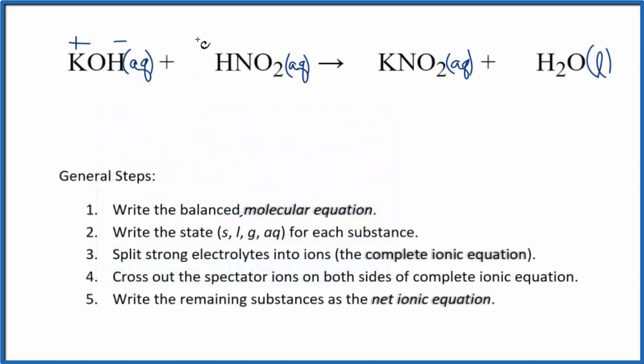So for the reactants, we have K+, and I'll write the states at the end, plus the hydroxide, OH-, and then this weak electrolyte, we don't split those apart in net ionic equations, HNO2. Those are the reactants products.